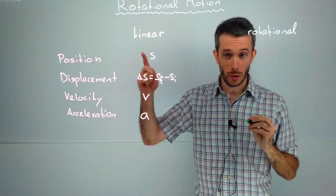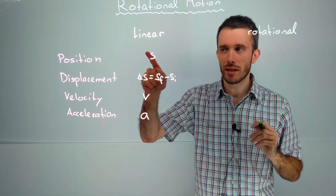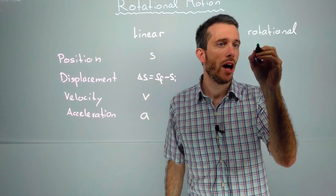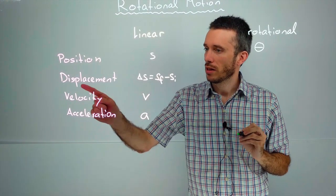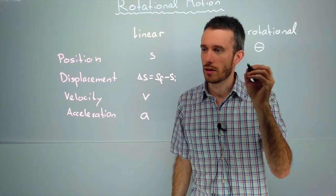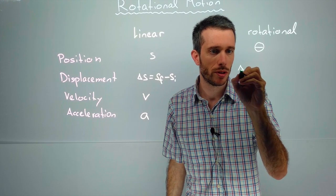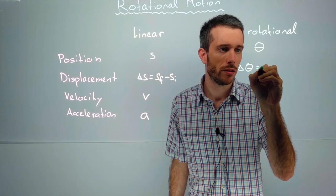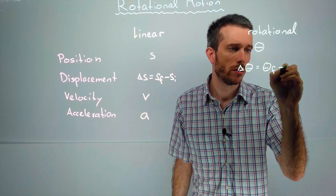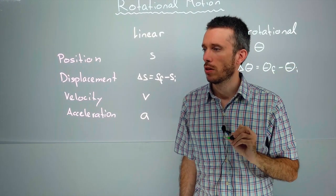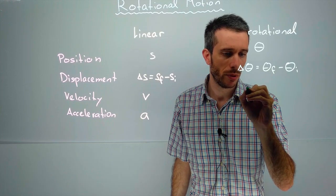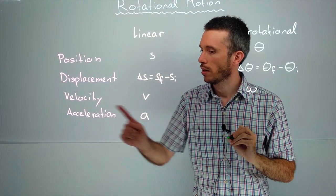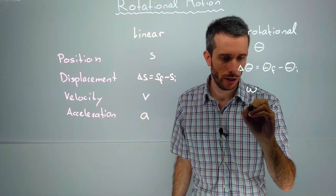So the position instead of giving it as a distance traveled is an angle traveled. The displacement is simply the change in the position of an angle. The velocity for the rotational case is going to be omega and the acceleration we're going to be calling alpha.